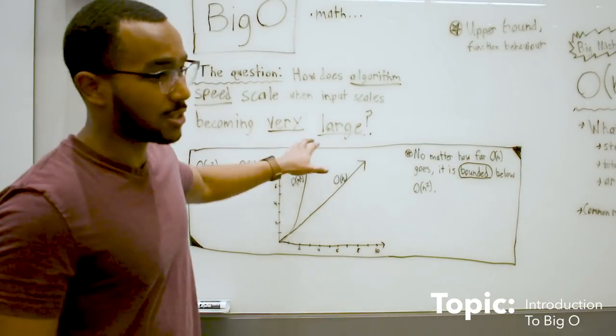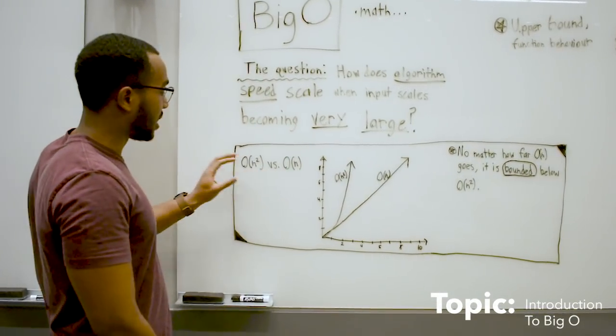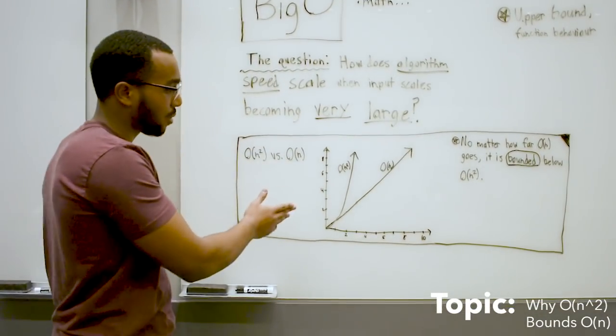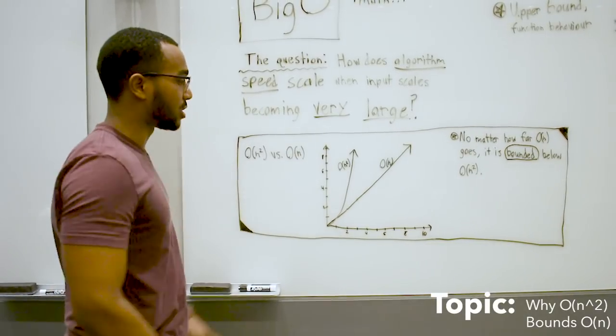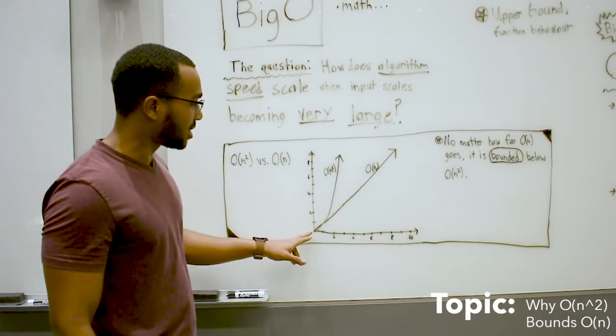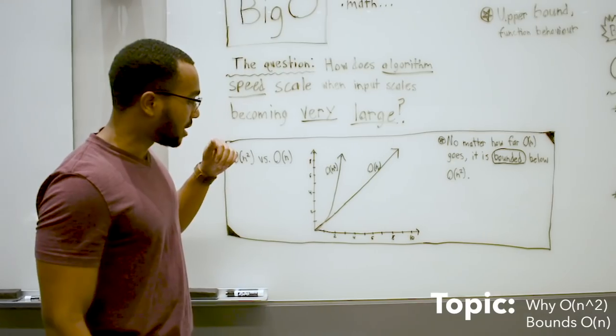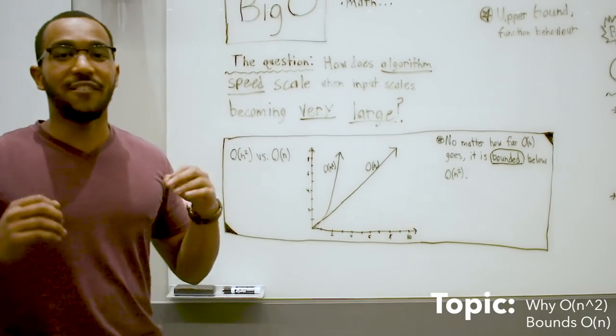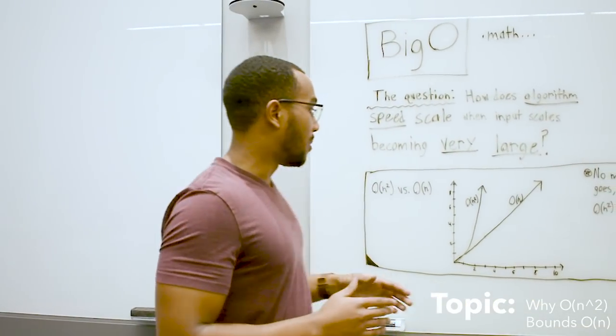Very large is the key term here. For example, we have a function that runs in n squared and a function that runs in linear time O of n. As we can see, O of n squared is actually faster at the start versus O of n.